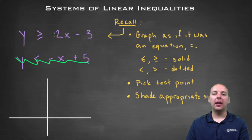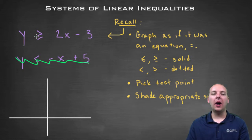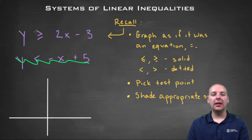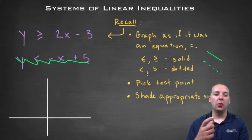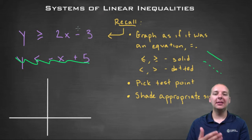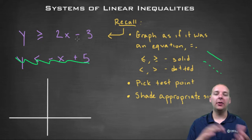The way you graph a single linear inequality is you treat it as if it was an equation. So in your mind you would think y equals 2x minus 3, for example. You're going to graph it as a solid line if this is a greater-than-or-equal-to inequality, and if it was a strict inequality it would be a dotted line. The solutions to these inequalities are going to be points all over the plane that fall on one side of the line or the other.